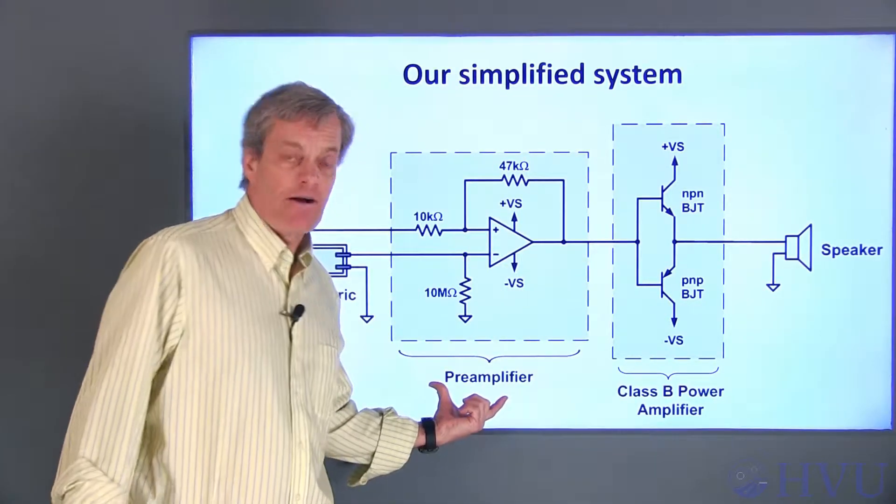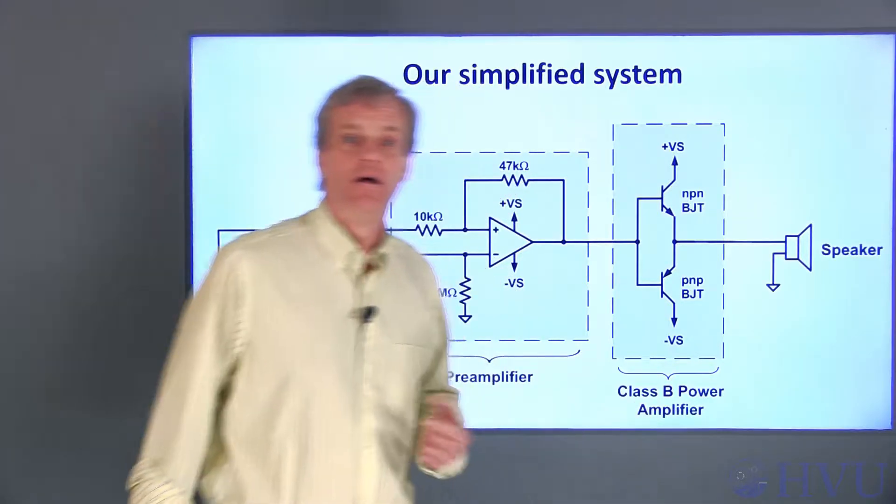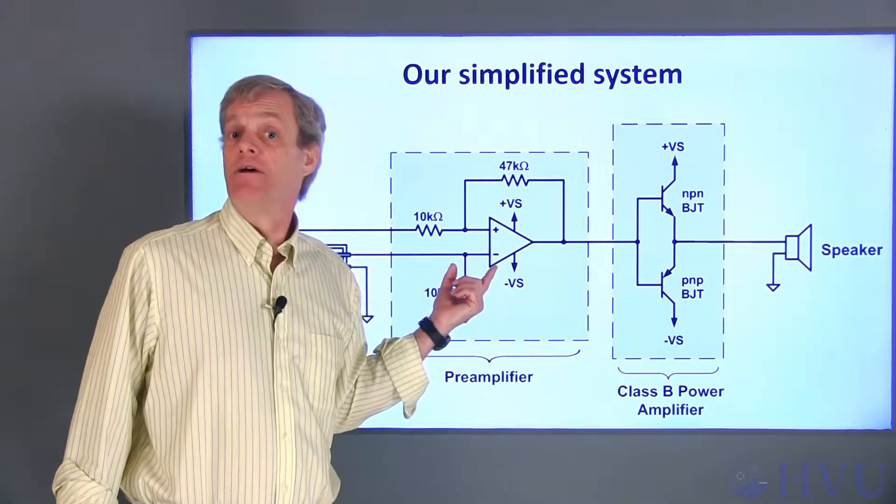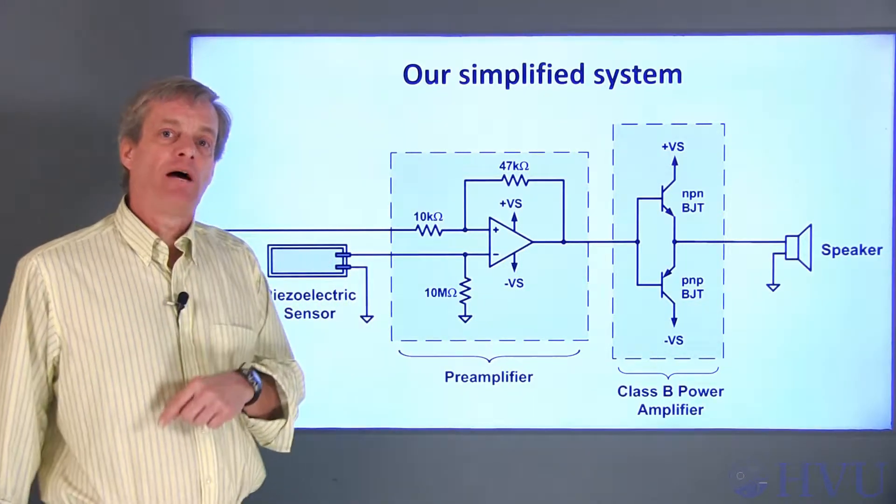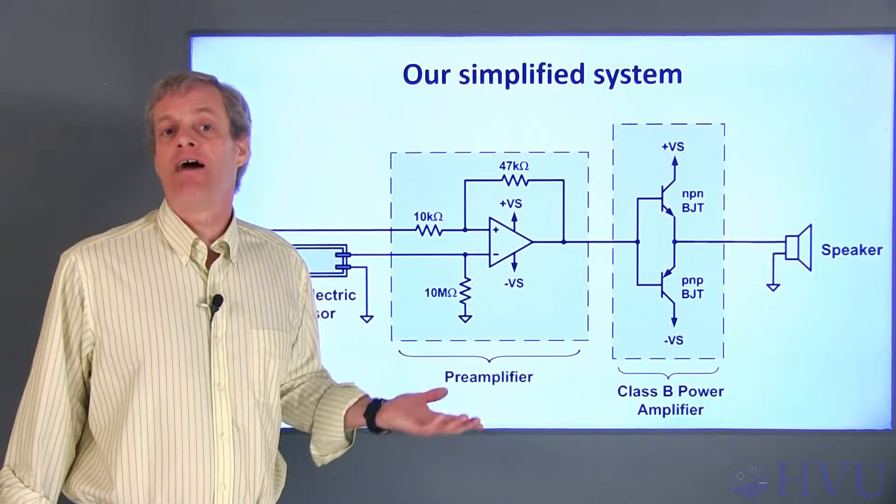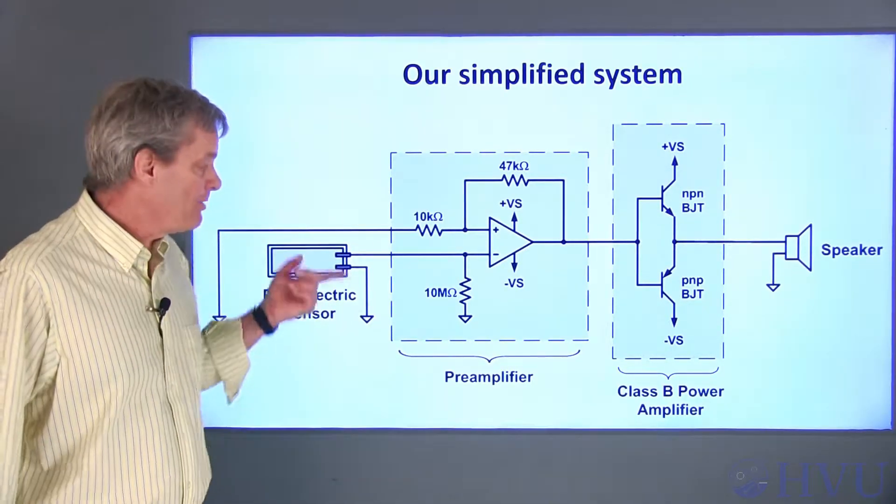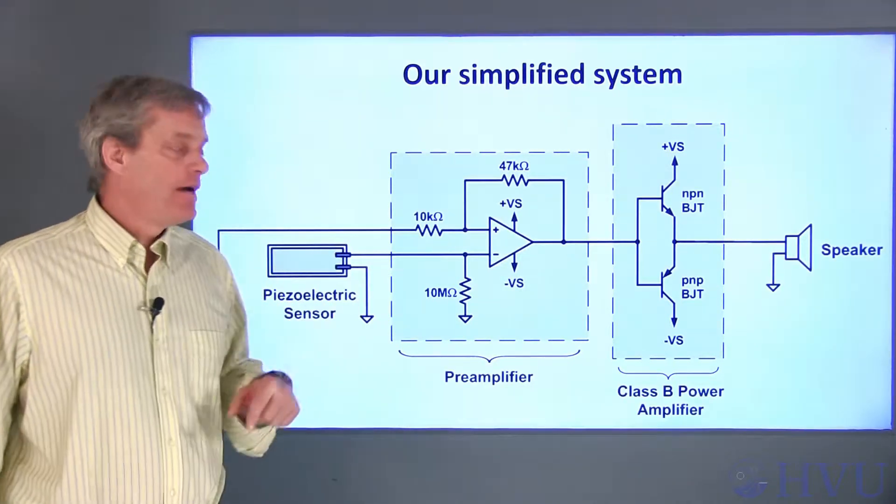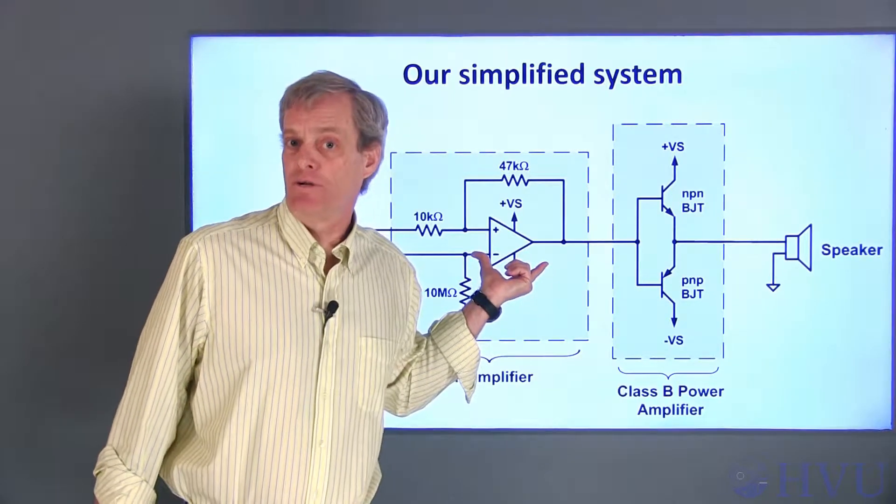We've used both a preamplifier and an amplifier stage to power the speaker. Our preamplifier is implemented using an operational amplifier, this triangular symbol here. One nice property of operational amplifiers is that they have what is called a high input impedance. This preamplifier circuit draws almost no current from the sensor. A drawback of our operational amplifier is that it doesn't put out much output current.